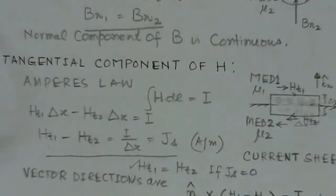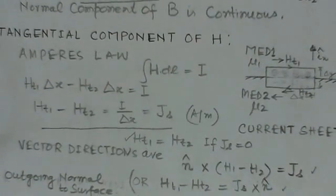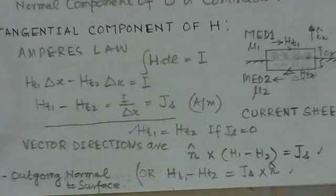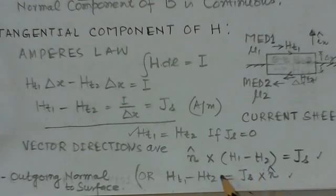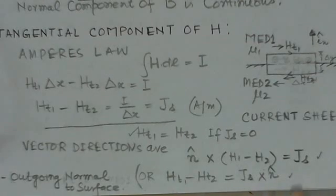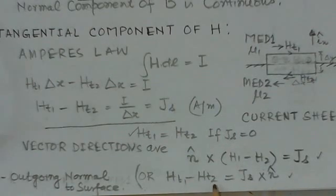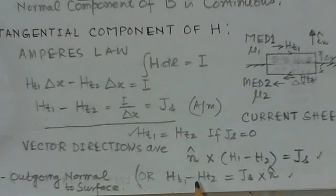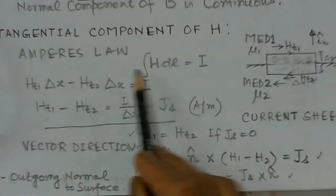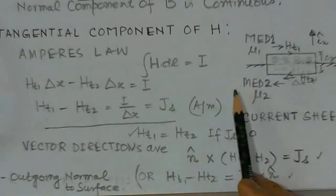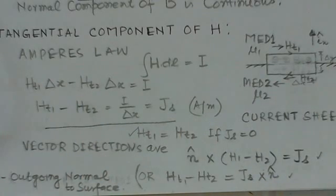This is a very important boundary condition: n × (H1 − H2) = Js. We can always determine the value of the field using this. When we consider the 2011 GATE problem, it will make further clear how this boundary condition is applied in that particular problem.